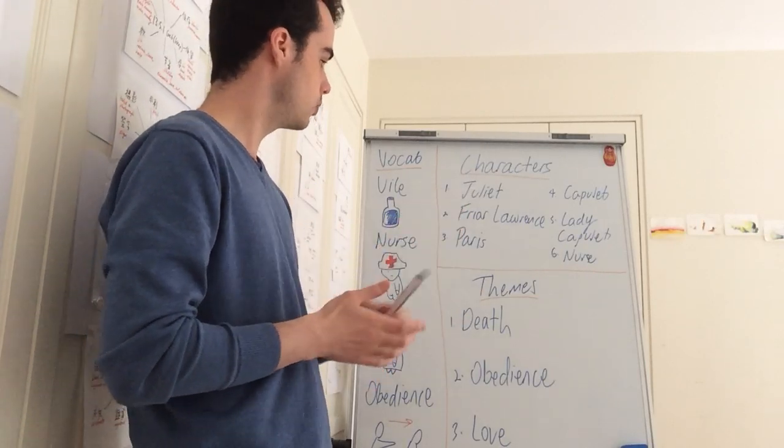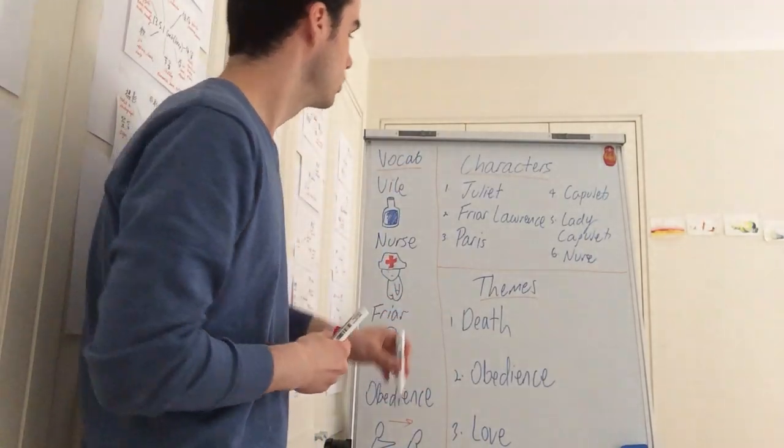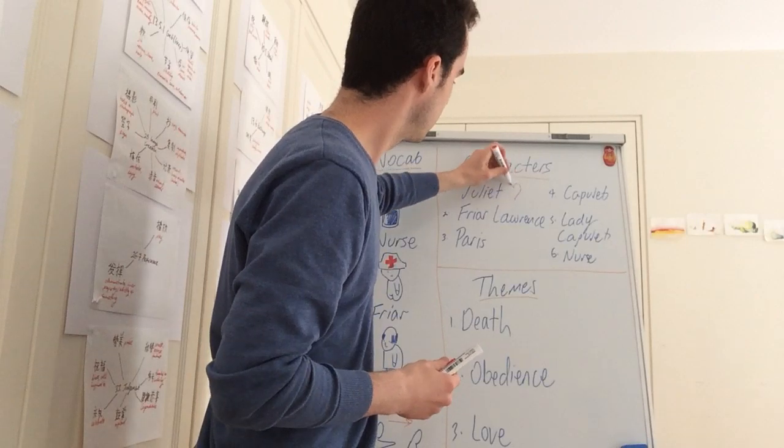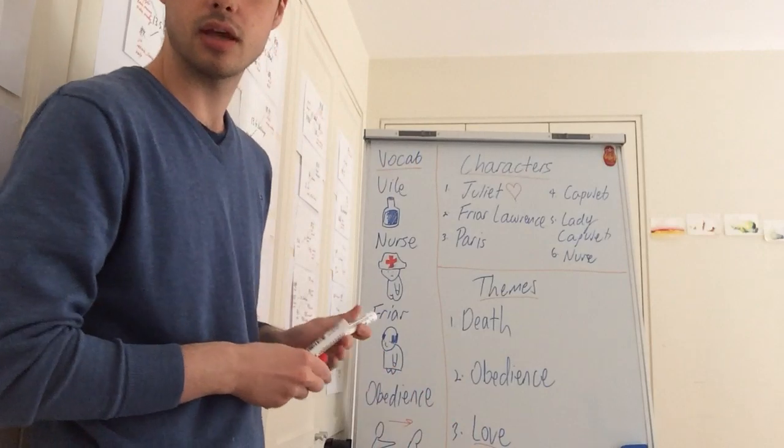We have Juliet, who is one of the main characters, and she is very much in love with Romeo. Let me just draw a little heart right there, because that will be important when we come to our theme of love, just down here.